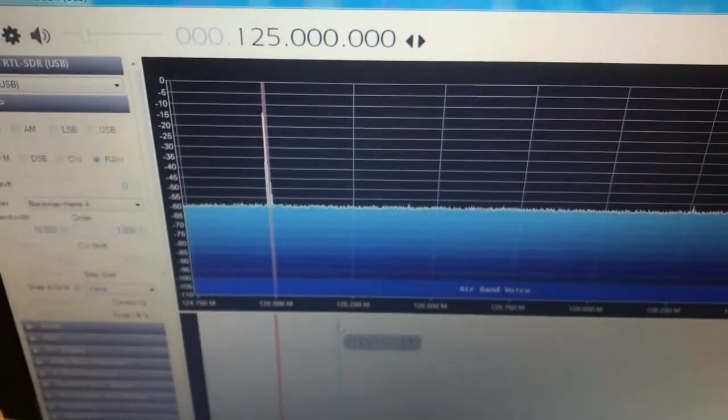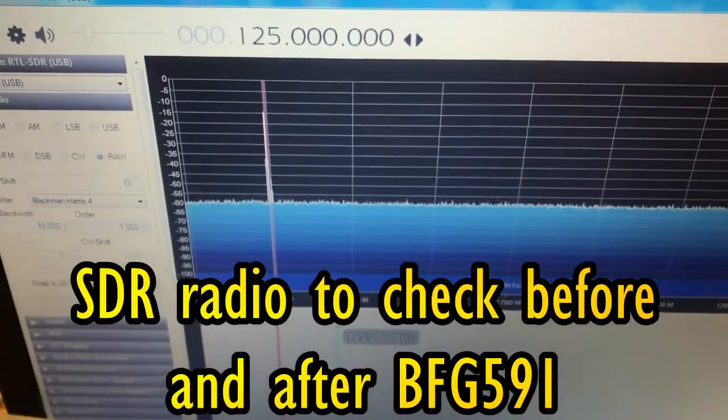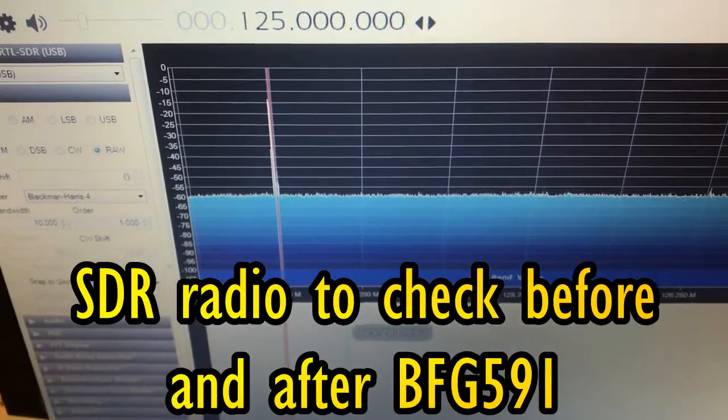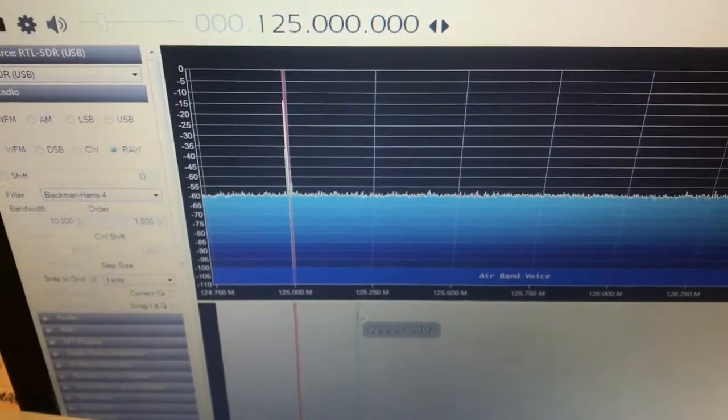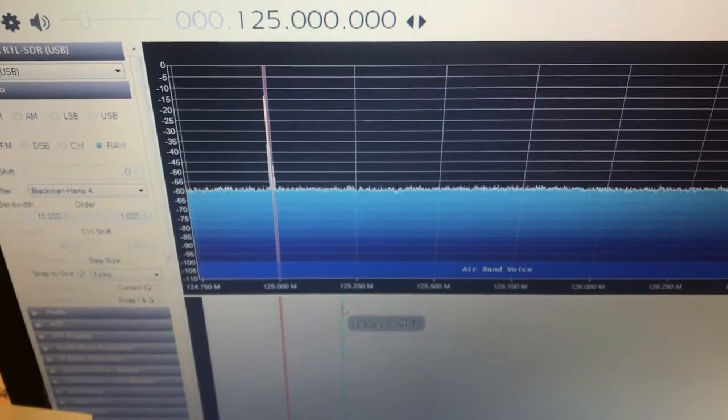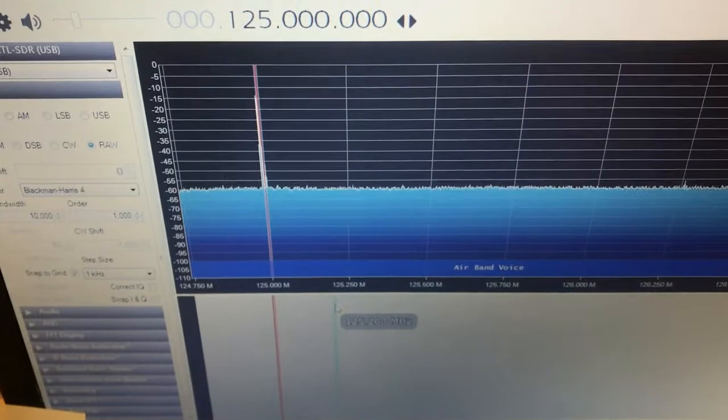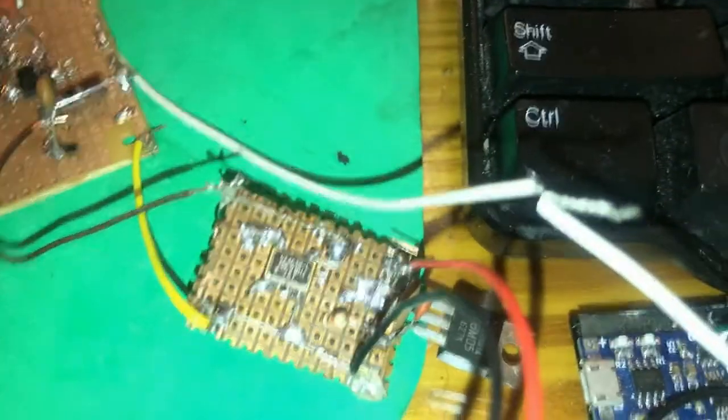As you can see now, the amplifier is connected with this wire and the frequency is something like minus 10 dB.